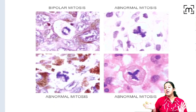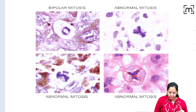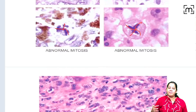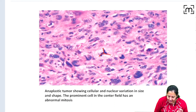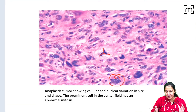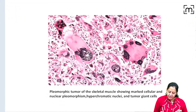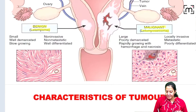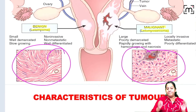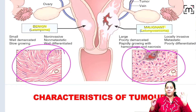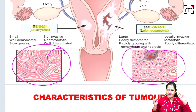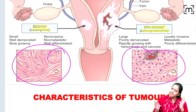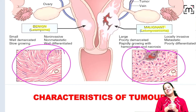Looking at diagrams, you can see spindle formation indicating abnormal mitosis, giant cells, pleomorphism with variation in shape and size, and anisonucleosis — all confirming malignancy. The 10 features of anaplasia — loss of basal polarity, pleomorphism, NC ratio, anisonucleosis, hyperchromatism, prominent nucleoli, mitosis, tumour giant cells, cytoplasmic changes, and aneuploidy — are used to differentiate benign from malignant tumours.